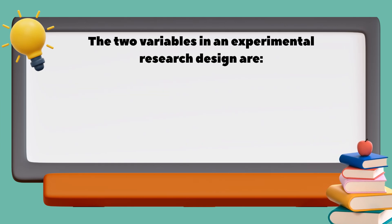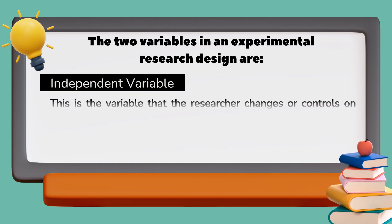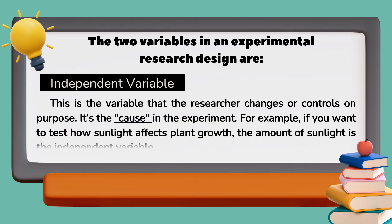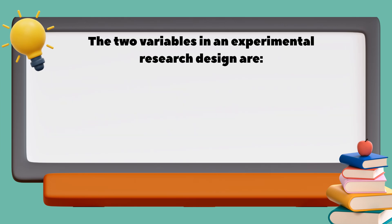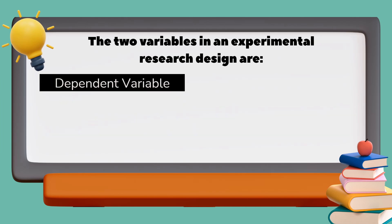The independent variable is the variable that the researcher changes or controls on purpose. It's the cause in the experiment. For example, if you want to test how sunlight affects plant growth, the amount of sunlight is the independent variable.